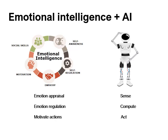Emotional intelligence has been defined as a set of skills that contribute to the accurate appraisal or expression of emotion in oneself and in others, the effective regulation of emotion in self and others, and the use of feelings to motivate, plan, and achieve day-to-day actions. Therefore, in order to endow a machine with emotional intelligence, it must be equipped with sensors capable of capturing users' emotions — which is sense — the appraisal of captured emotions to regulate its internal states — compute — and finally, perform tasks where actions are regulated by the computed emotional state — act.